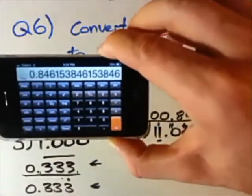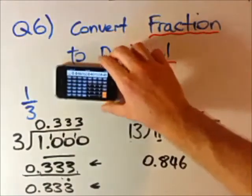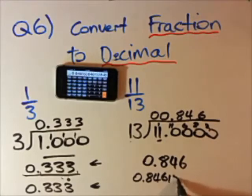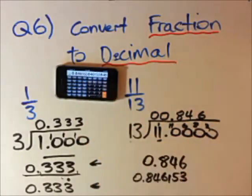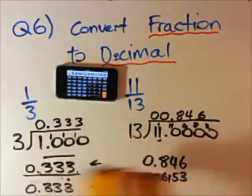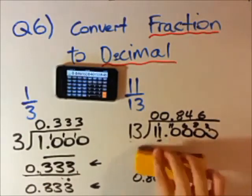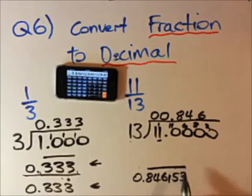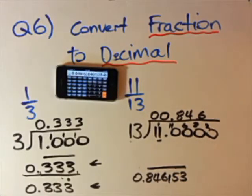Our answer now is 0.846153 with a line over 846153, because that pattern of numbers is going to recur, or keep repeating itself. Remember, the line means whatever's underneath it keeps repeating. That's just a little addition to that question.